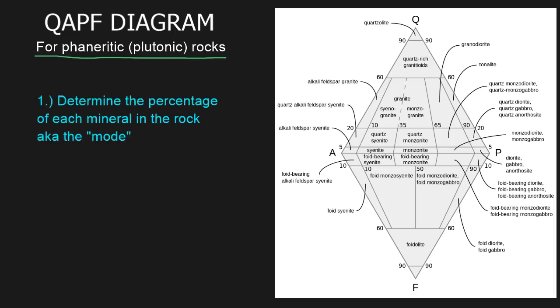So how do we use this diagram? First we have to determine the percentage of each mineral in the rock that we are examining. This is sometimes called the mode. After we determine the mode, we're going to plot those mineral percentages on this diagram and from that we'll come up with a name for that rock. Let me explain this diagram to you and how it works.